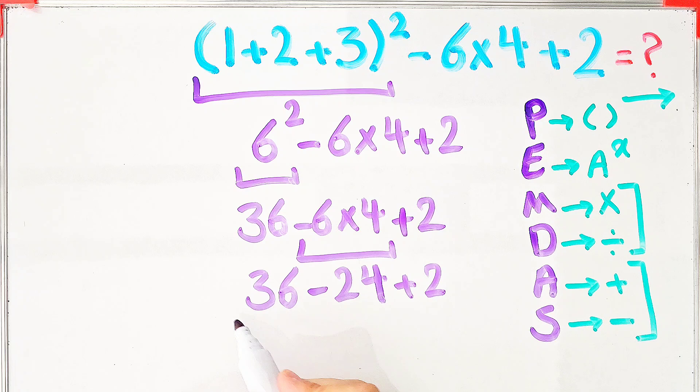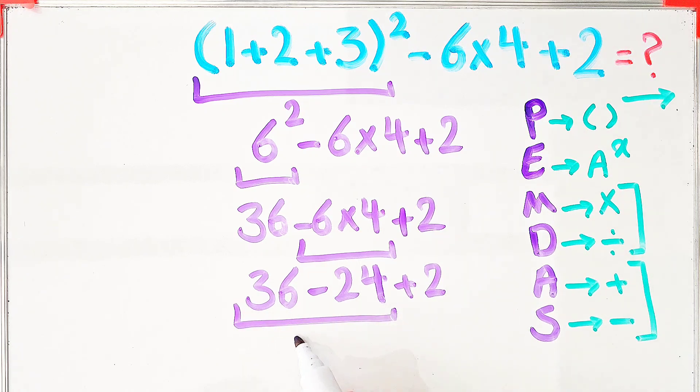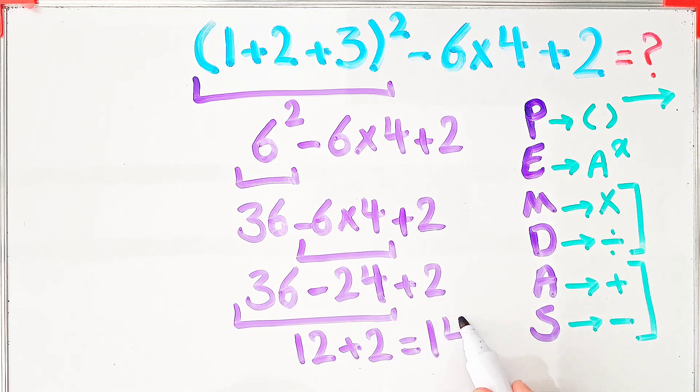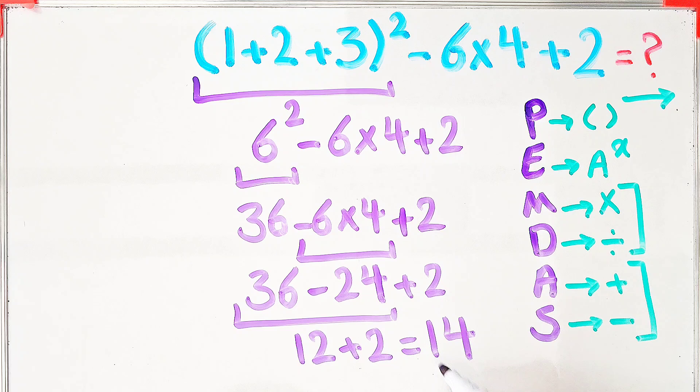36 - 24 equals 12, and 12 + 2 equals 14. The final answer to this question equals 14. Thanks for watching guys. Please subscribe to the channel and leave a comment. Goodbye.